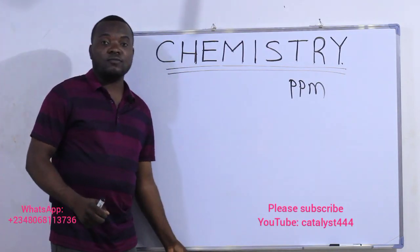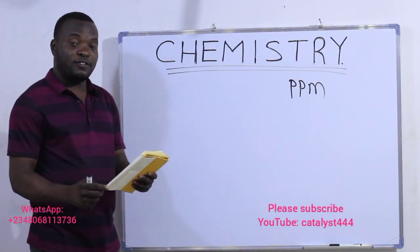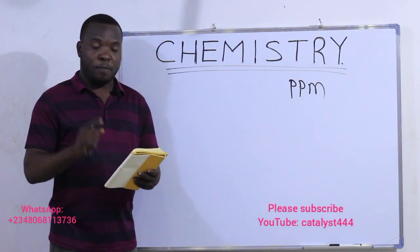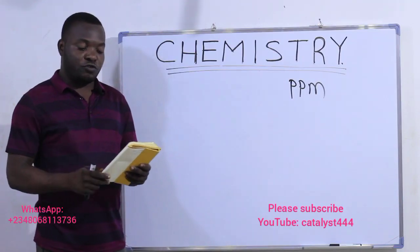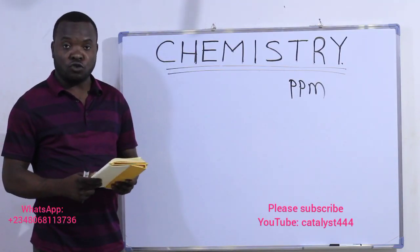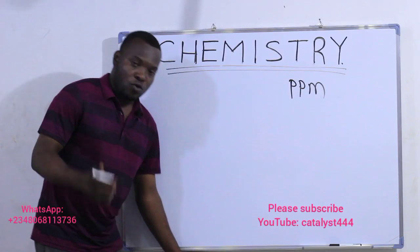So we'll take a look at this question that says: a solution contains 0.43 grams of iron per liter. What is the concentration of iron in the solution in PPM? We'll solve it right away.